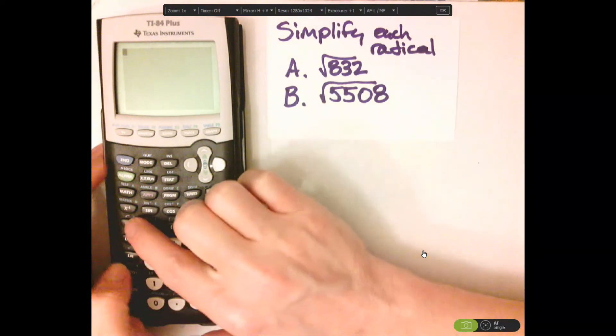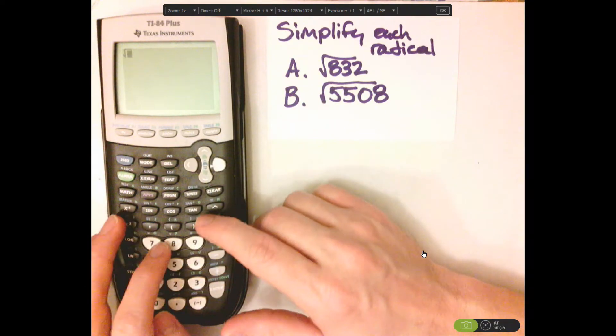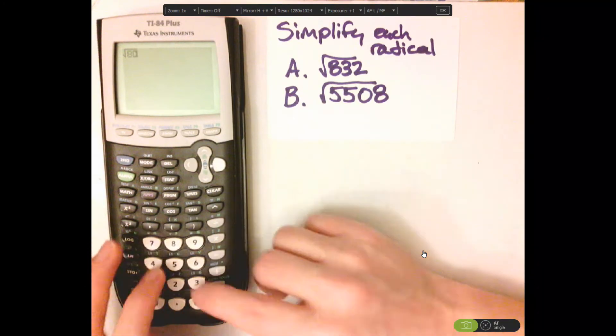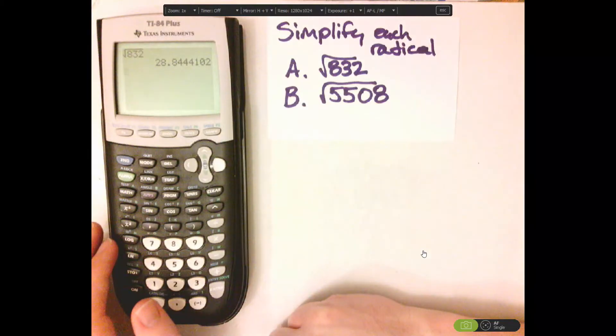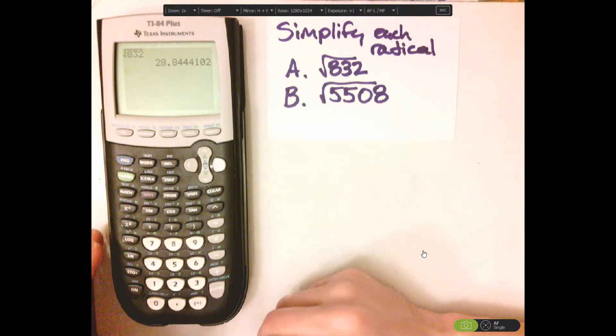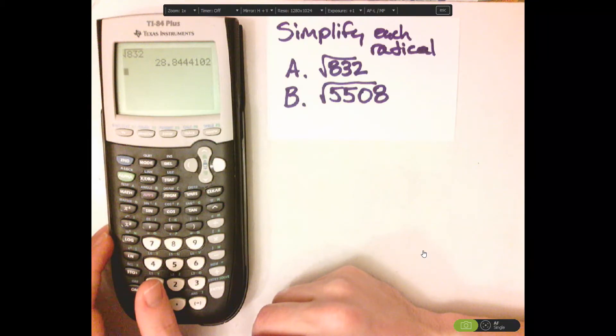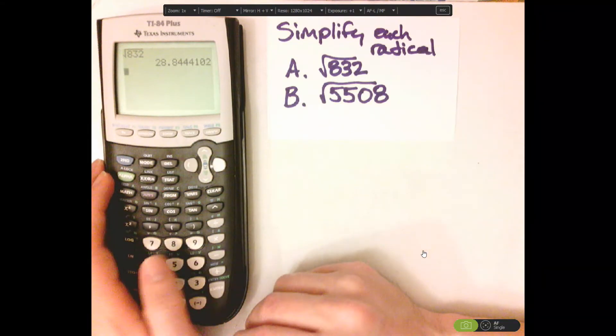If you just type in the radical square root of 832 into your TI-84 Plus calculator, you're going to get a decimal. So one thing you can do is use the table feature.